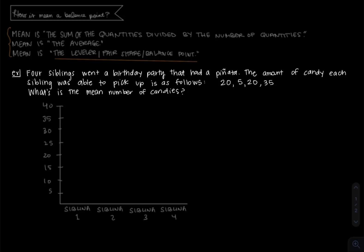So in this example, four siblings went to a birthday party that had a piñata. The amount of candy each sibling was able to pick up is as follows: 20, 5, 20, 35 pieces. And we want to know what is the mean number of candies.